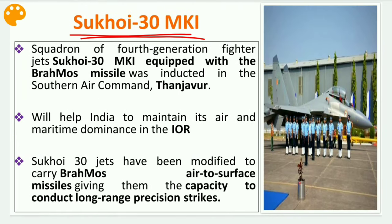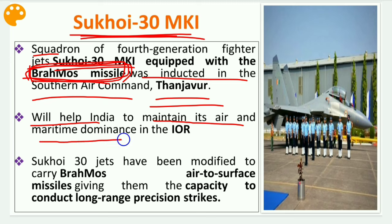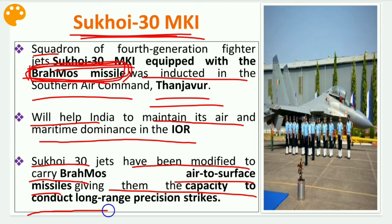A squadron of fourth-generation fighter jet Sukhoi 30 MKI equipped with the BrahMos missile was inducted into the Southern Air Command, located in Thiruvananthapuram. BrahMos is a state-of-the-art cruise missile developed by India, also known as the Brahmastra. This induction will help India maintain its air and maritime dominance in the Indian Ocean region, as the Sukhoi 30 jets have been modified to carry BrahMos air-to-surface missiles, giving them capacity for long-range precision strikes.